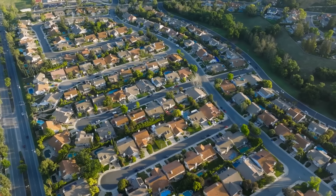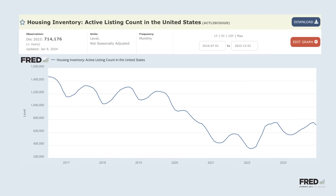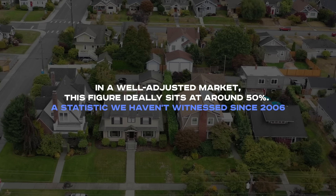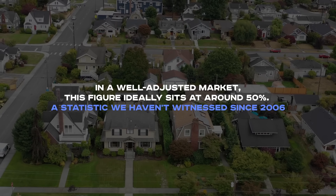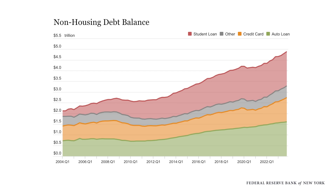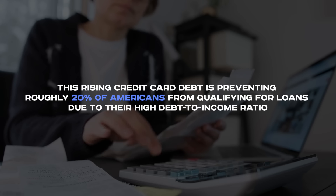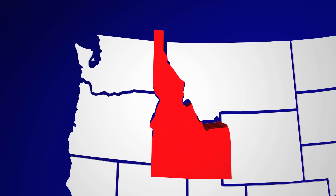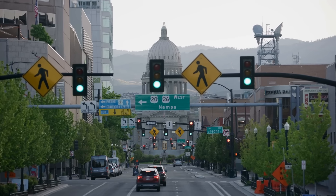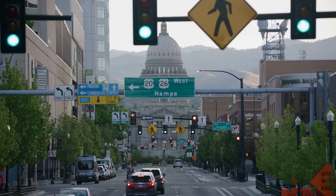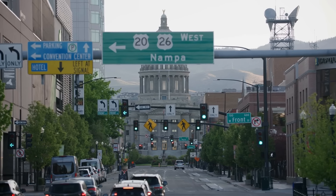Number five: housing affordability. We're facing a significant challenge in the United States regarding housing affordability. Only about a quarter of houses currently on sale are financially feasible for average income earners. In a well-adjusted market, this figure ideally sits at around 50%, a statistic we haven't witnessed since 2006. Additionally, there's considerable concern over skyrocketing credit card debt, which hit its peak in the second quarter of 2023, exceeding $1.13 trillion. This rising credit card debt is preventing roughly 20% of Americans from qualifying for loans due to their high debt-to-income ratio. In Boise, Idaho — one of the hottest residential markets in the U.S. — housing prices, credit card debt, and interest rates collectively contribute to a serious affordability crisis. Experts foresee a necessary decrease in prices in the next 18 to 24 months.